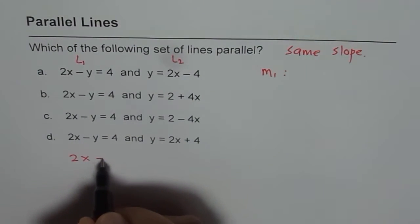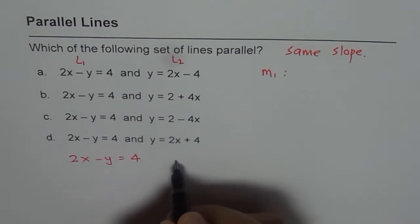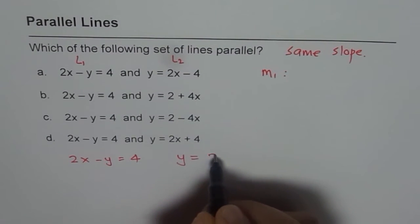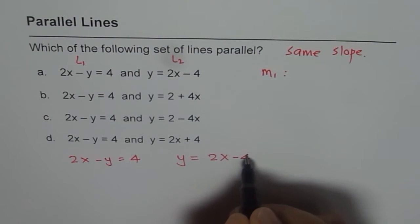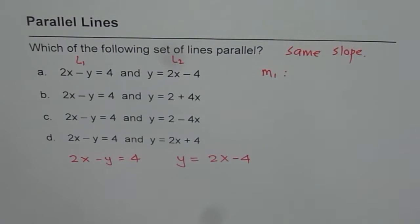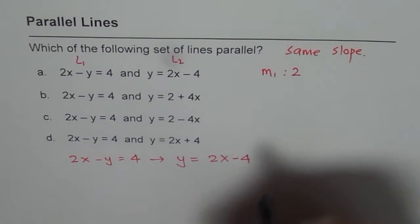We can write 2x minus y equals to 4. If I rearrange it we get y equals to 2x minus 4. So that is the equation. Both are equivalent equations. So we know slope m1 is indeed 2.